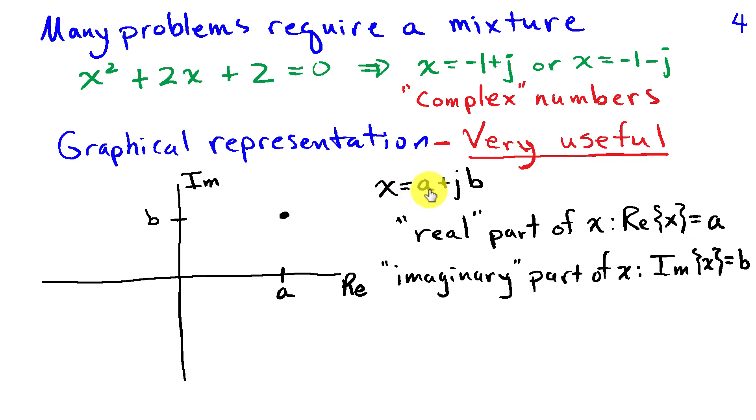The real part is the part that doesn't involve the j. And then the imaginary part is the part that involves the j. So Im(x), the imaginary part of x, would be equal to b. This number x, I can graph in a complex plane as a point with real part having coordinate a and imaginary part having coordinate b.